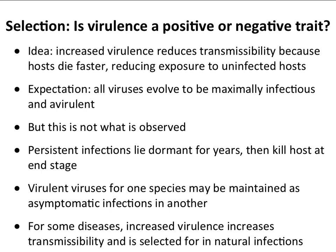This raises the question of whether virulence is selected for. Increased virulence may reduce transmissibility — if you die quickly from a virus infection, you're not likely to transmit it. If this were true, all viruses should evolve to be maximally infectious and not virulent. But that's not the case — we have plenty of virulent viruses, persistent infections, and viruses virulent in one species but not another. For some diseases, increased virulence may actually help transmission — think of virulence as making you cough harder or expel more droplets full of virus, which would make the virus more transmissible.